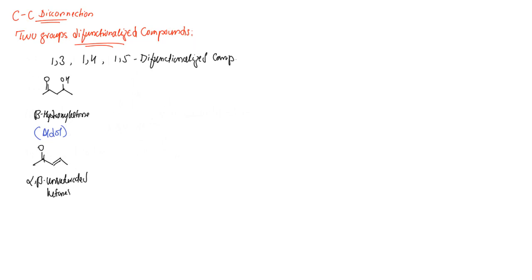The next category of 1,3 relationship involves a ketone compound with an amino group at the beta position — the alpha-carbon and beta-carbon are labeled accordingly. These compounds are known as beta-amino ketones, and we obtain this type of compound through a Mannich reaction.